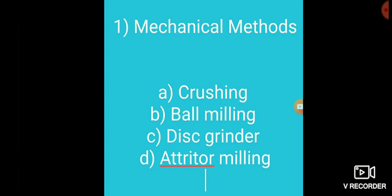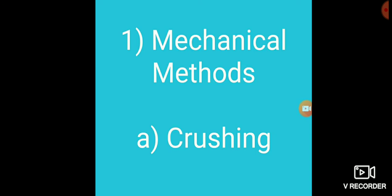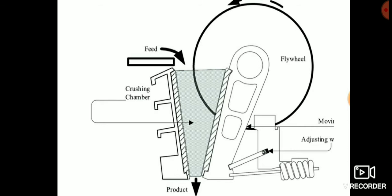Now the production techniques: the powder production techniques. The first one is mechanical method. In the mechanical method there are sub-classifications: crushing, ball milling, disc grinder, and attrition milling. These processes are not used much as primary methods for production of metal powders. Mechanical comminution is possible by methods such as impact, attrition, shear, and compression. The formation of metal powders by mechanical methods relies on various combinations of these four basic mechanisms.